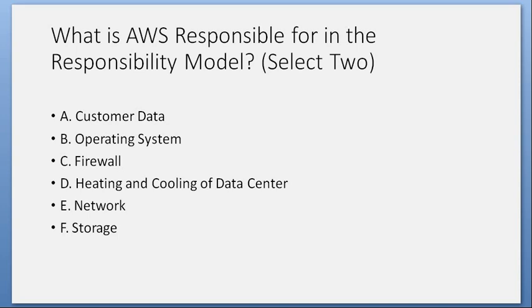What is AWS responsible for in the shared responsibility model? Select two. A. Customer data. B. Operating system. C. Firewall. D. Heating and cooling of data center. E. Network. F. Storage. Answer: D. Heating and cooling of data center, and F. Storage.